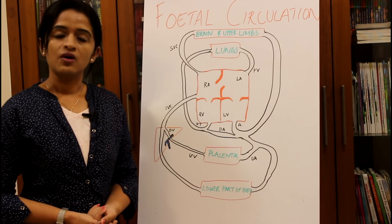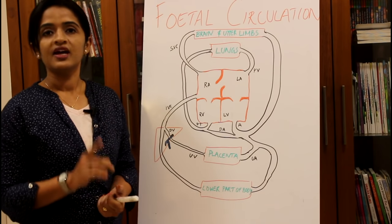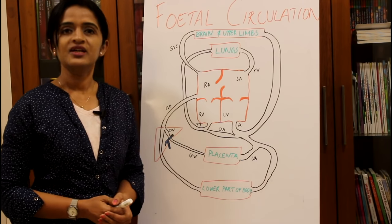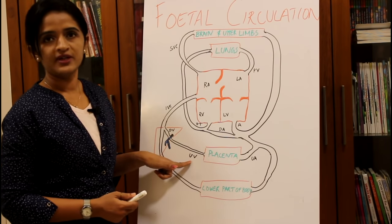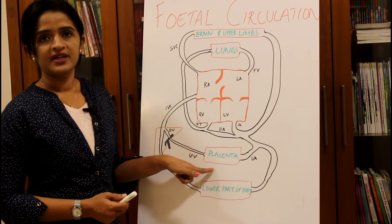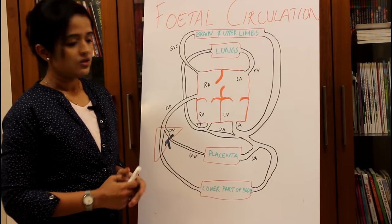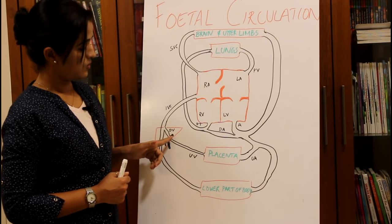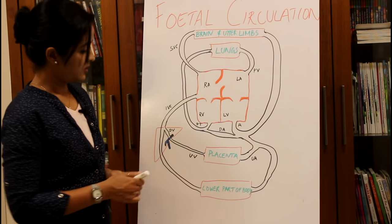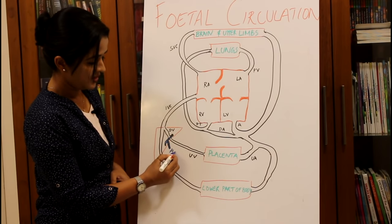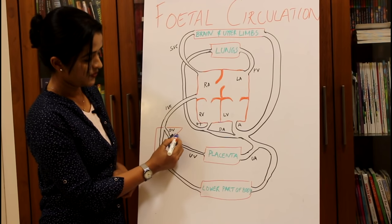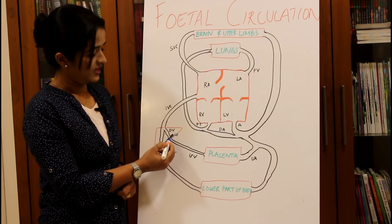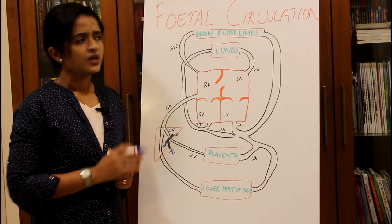The umbilical cord consists of two umbilical arteries and one umbilical vein. The umbilical vein which is left behind is usually the left umbilical vein, so it is through the left umbilical vein that the purified blood from the placenta reaches the fetus. Once it enters through the umbilical cord it joins with the left branch of the portal vein.